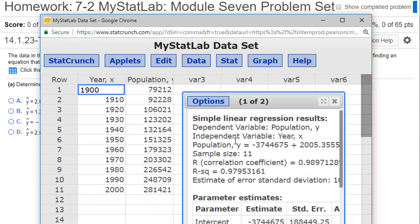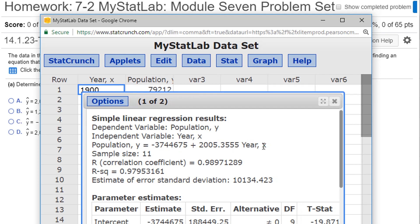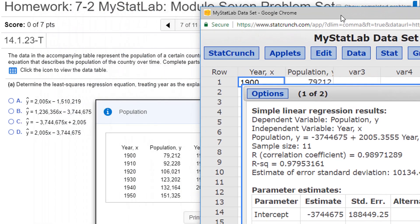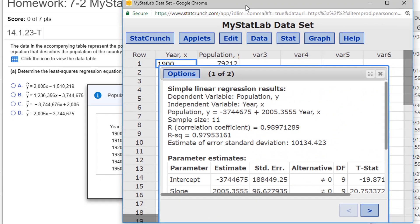And we're going to get our regression equation. It's going to be given to us here. I'm going to just move this a little bit over to the side so I can see my options right here next to it. We've got the x variable has the coefficient 2005.355, so it rounds to 2005. And then the intercept is negative 3744675.